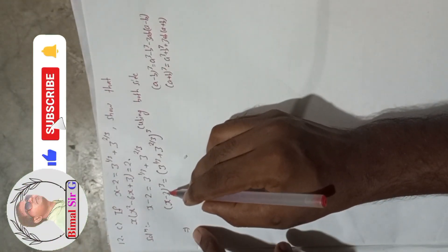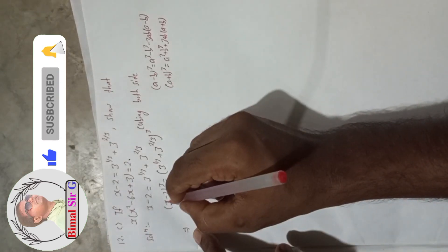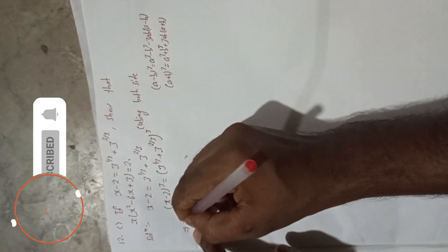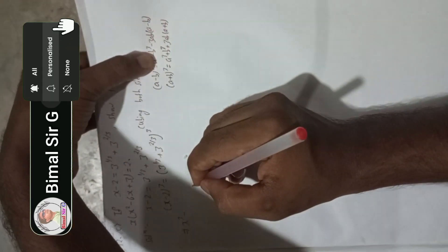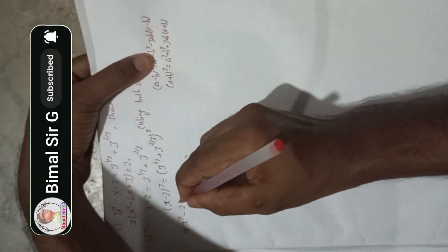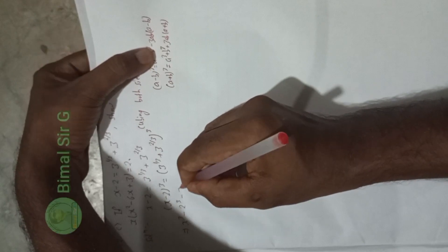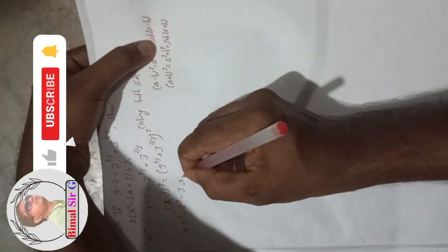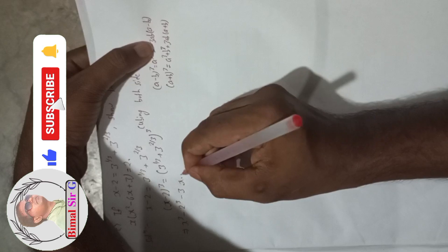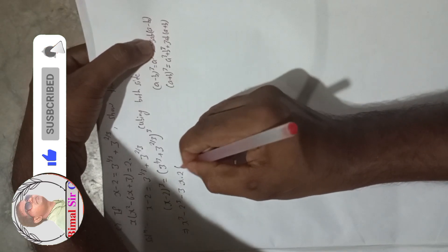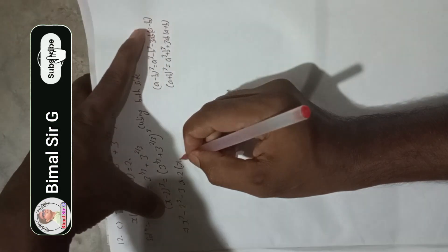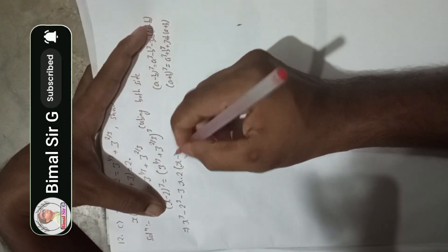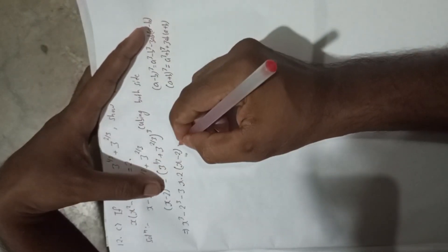Now x minus 2 means a minus b, so a is x and b is 2. Applying the formula: x³ minus 2³, so x³ minus 8, then minus 3 times a times b, which is 3 times x times 2, and then bracket a minus b, which is x minus 2.